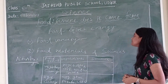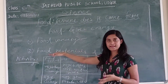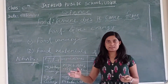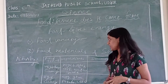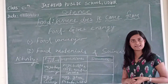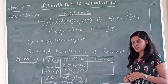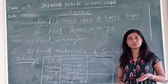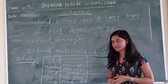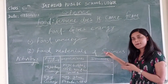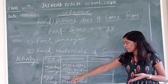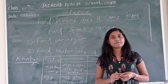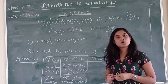Now let's move to the next sub-topic: food materials and their sources. We already talked about food ingredients, but where are these ingredients obtained? What are the sources? For example, vegetables and fruits — we get them from plant sources. Egg — the source is animal. So we come to know that the food we eat every day has two sources: some are plant sources and some are animal sources.